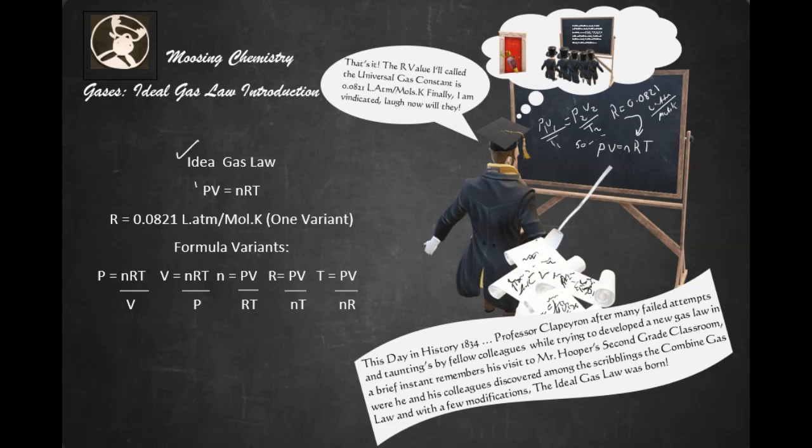Well, it's pressure times volume equals the number of moles times the universal gas constant, which we recognize as R, times temperature.